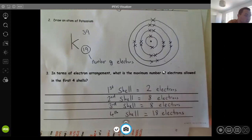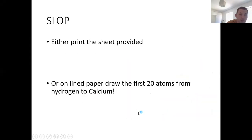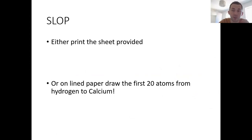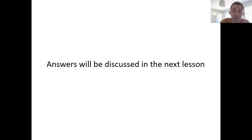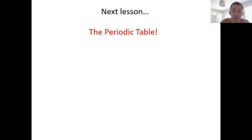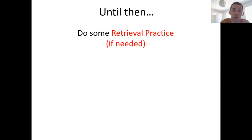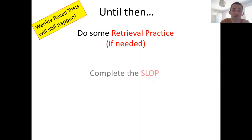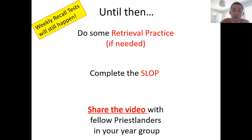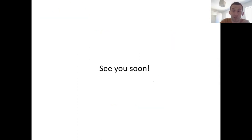Spend a couple of minutes now working through the sheet, remembering it, testing yourself, and really understanding it. Your challenge today is to draw the first 20 atoms — you can either print off the sheet I provided or work from the screen. That's from hydrogen and helium all the way up to calcium. We've done potassium together, but can you draw the others? Give it a really good go using the rules I provided, and then tomorrow we'll go through the answers. Tomorrow we'll also look at the periodic table in more detail — the sections and what they tell us. Before then, do some retrieval if needed with little cards, complete the exercise, draw the first 20 atoms, and share with your peers if you haven't done so already. Have a good time and I'll see you tomorrow.